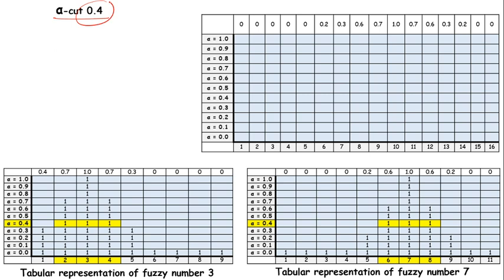We start from 0.4. You can start from here or you can start from here, that is totally up to you. For 0.4 in fuzzy number 3, we got A1 is 2 and A2 is 4.